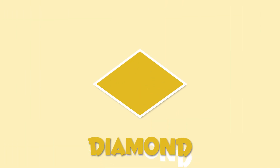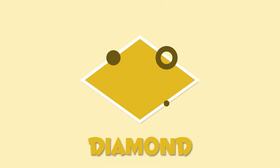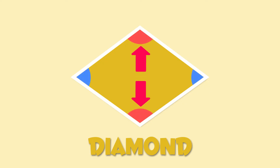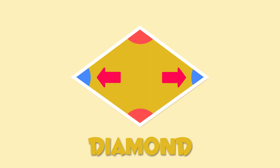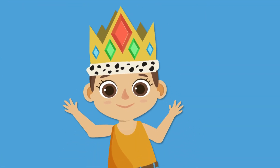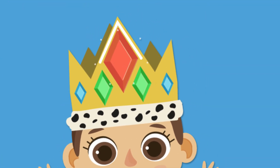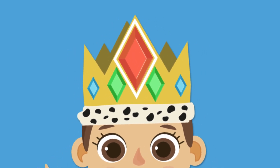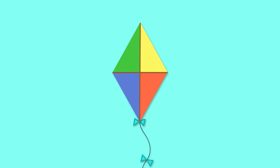This is a diamond shape. Its four sides are identical, but its angles are not — this one and this one are equal, and so are these two. A diamond looks like the jewel on this crown, or like this kite.